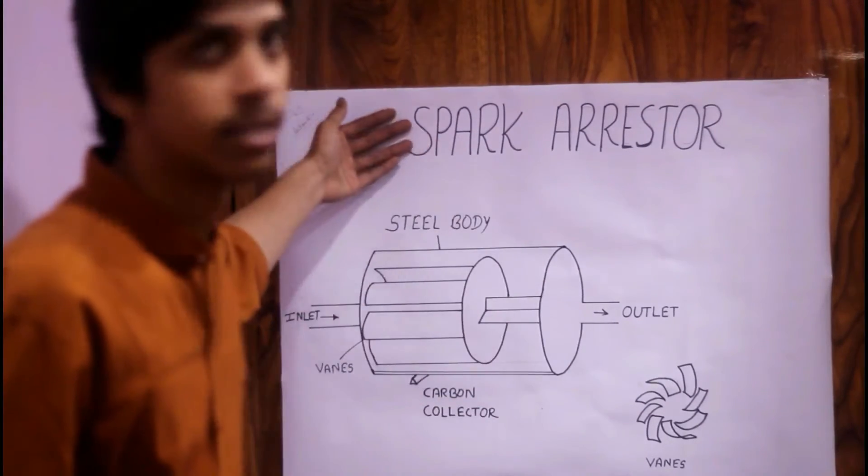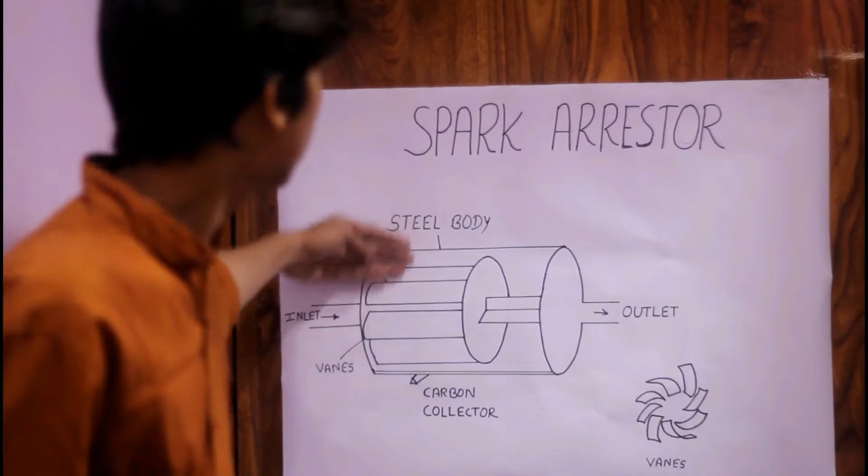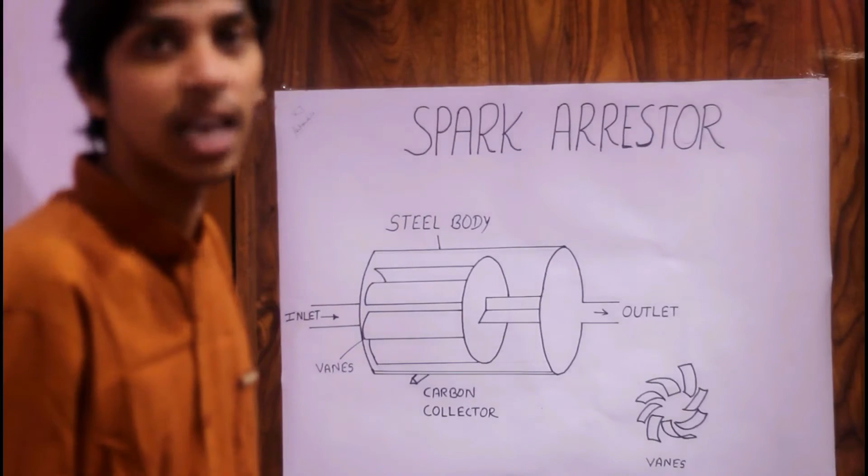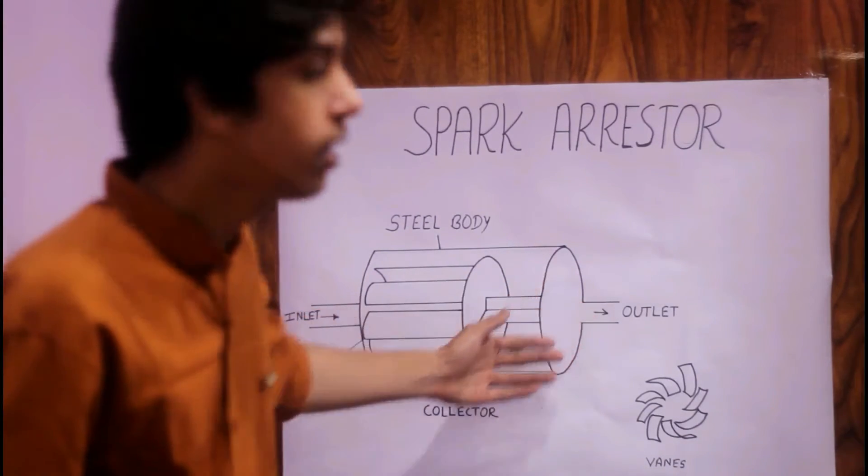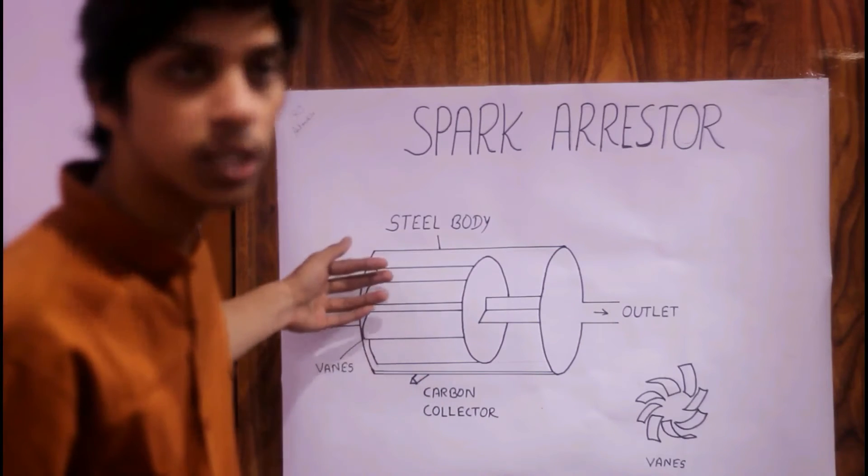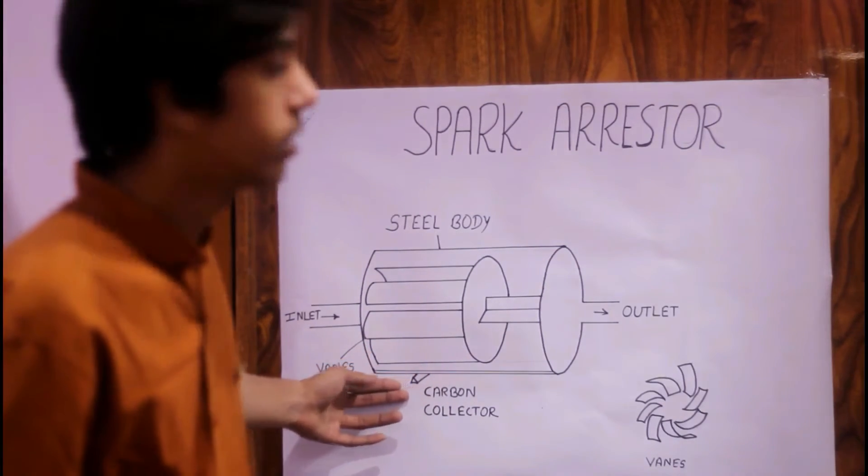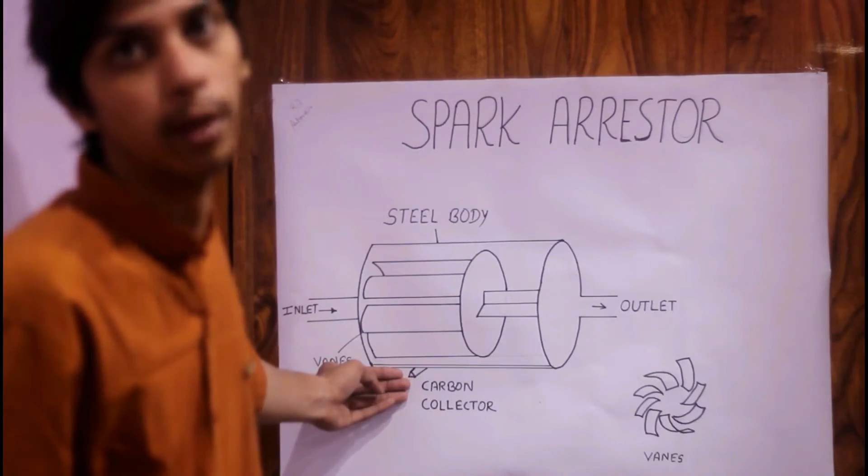The spark arrester mainly consists of a steel body in which the vanes are present. These vanes are guide vanes. An inlet and outlet is connected with this steel body, and another thing which is a carbon collector is connected with this steel body. This carbon collector can be removable.